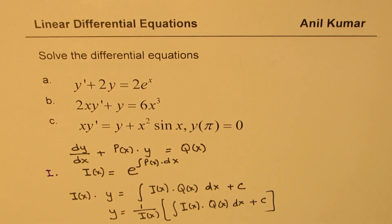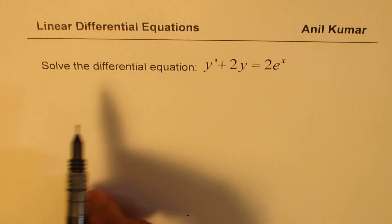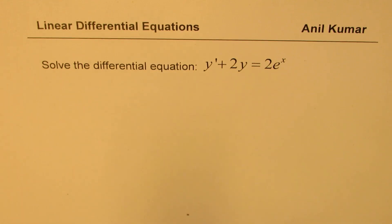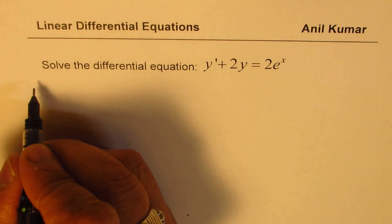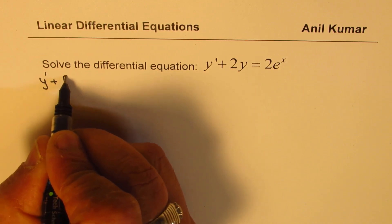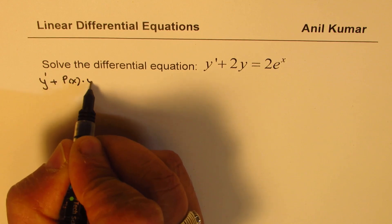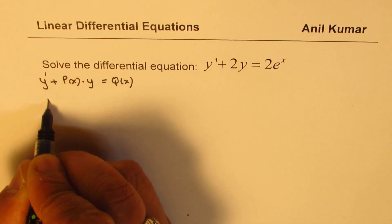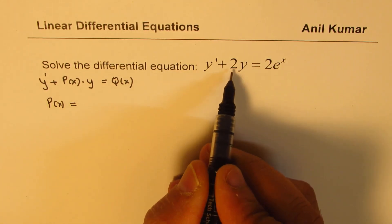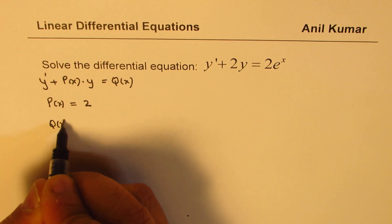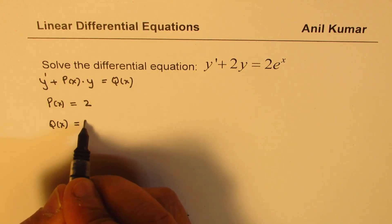Let's take up the very first example. We solve y prime plus 2y equals 2e to the power of x. Comparing with the standard form y prime plus p(x)y equals q(x), we identify p(x) equals 2 and q(x) equals 2e to the power of x.